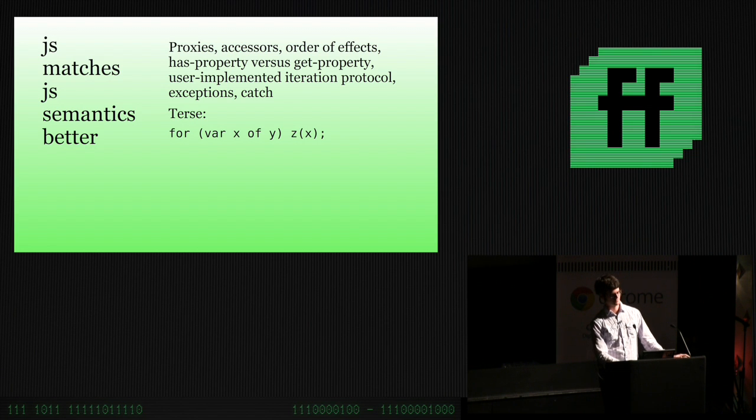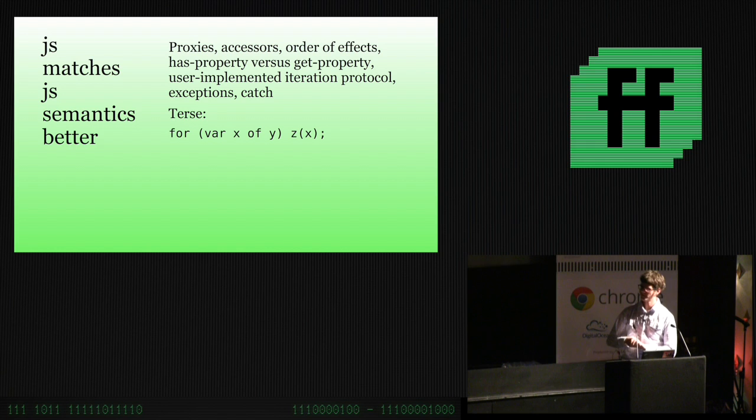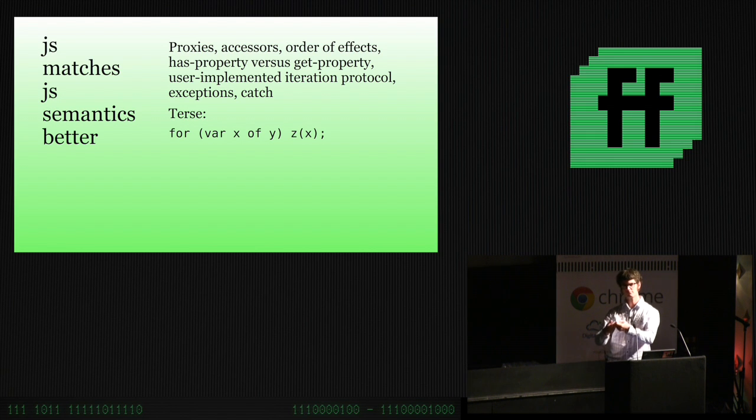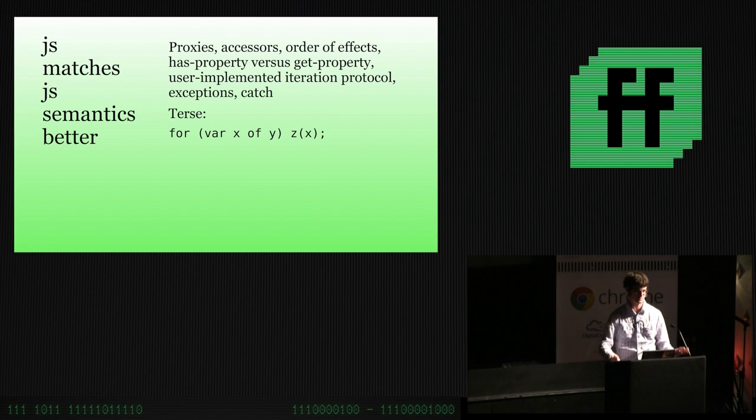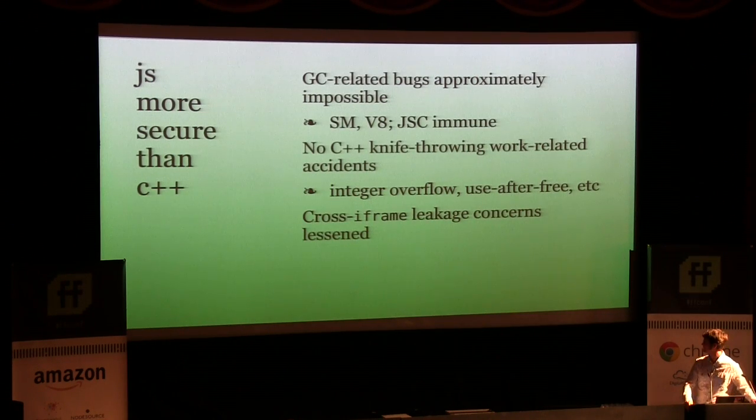There's another symmetry we can exploit, which is that by writing something in JavaScript, we can more easily produce the desired behavior. In something as terse and lovely as the new ES6 iteration for var x of y, z of x, there's a lot of stuff going on. You have to get the iterator, call next all these times, set up a context for exceptions, close down the iterator, test the done thing, handle proxies and getters. It's a big old mess. If I write in JavaScript, it's short, sweet, to the point, and does the right thing.